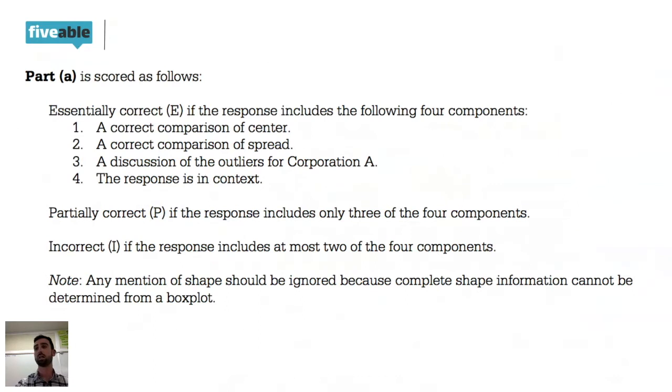Context is going to be super important when you're responding to an AP problem. You got partially correct if you include three of the four. If you forgot context or forgot to mention the outliers, you only got a P. Even just not doing one of them is going to knock you down to a P, and then two of the four is going to be an I. These are one of the questions that you really want to get a four on so you have some wiggle room later on in the free response section. A little note: any note about shape should be ignored because the complete shape information cannot be determined from a box plot. We can get the general shape of a box plot, so I'm kind of surprised that they said this, but we can't get the exact shape but we can get a rough estimate.